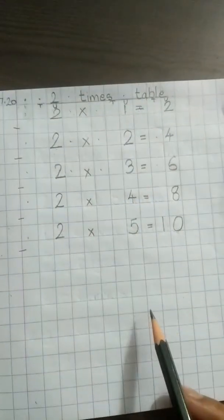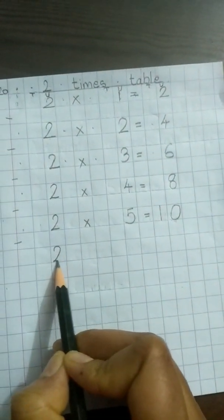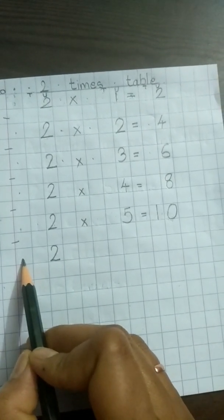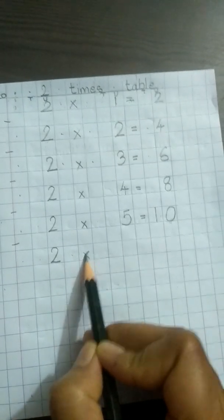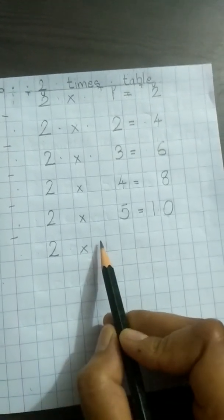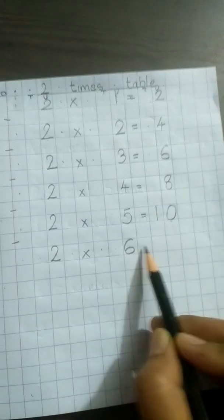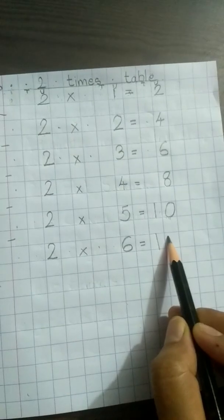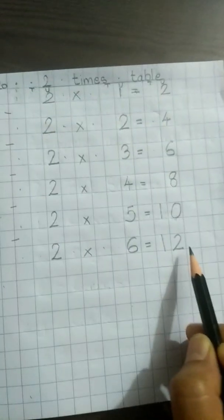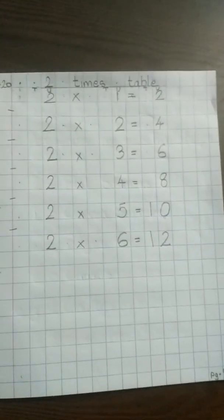Now same way we will continue for the next one also. So that is: leave the first box, then a blank, 2 dot cross — that is a multiplication sign — and then it is number 6. '2 6s are 12': 12 is 1 ten and 2 units. So 1 ten and 2 units, and so forth. We will continue till 2 10s are 20.